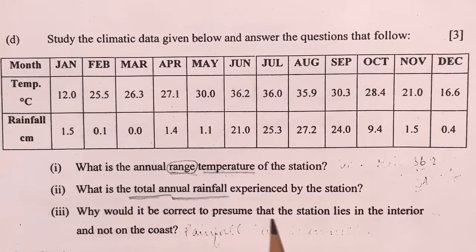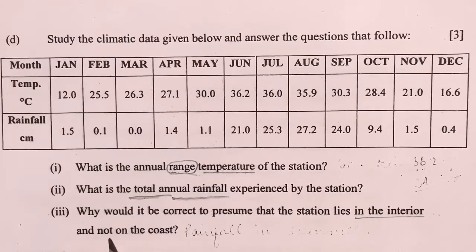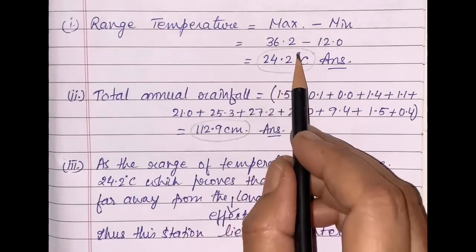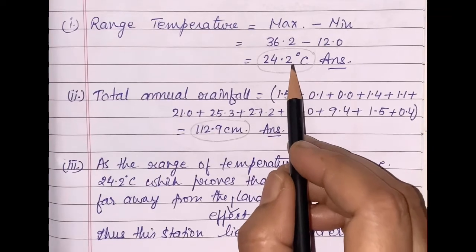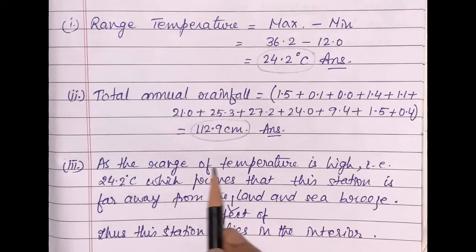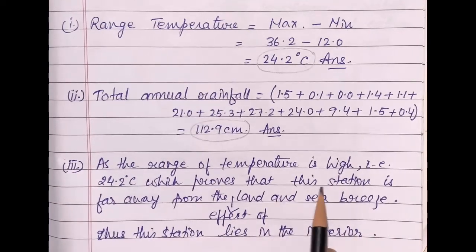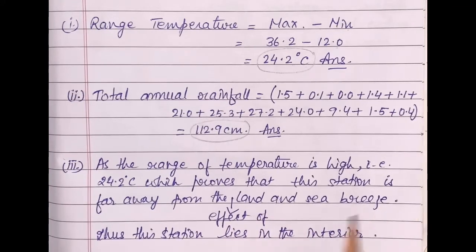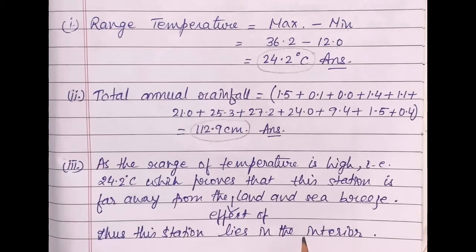To find out if the given station is in the interior or on the coast, we have to look at the range of temperature, which you have already calculated as 24.2 degrees C. This means it is very high, and it proves that the station is far from the effect of land and sea breeze. Thus, this station lies in the interior.